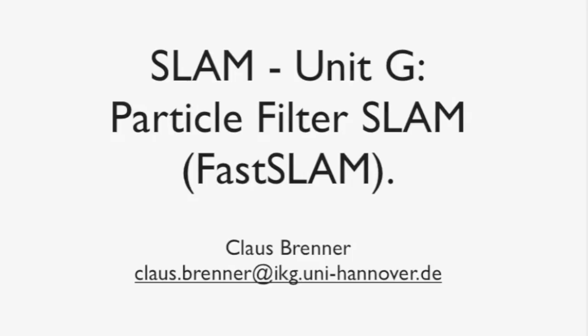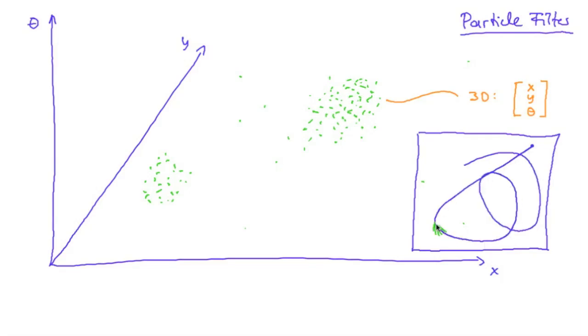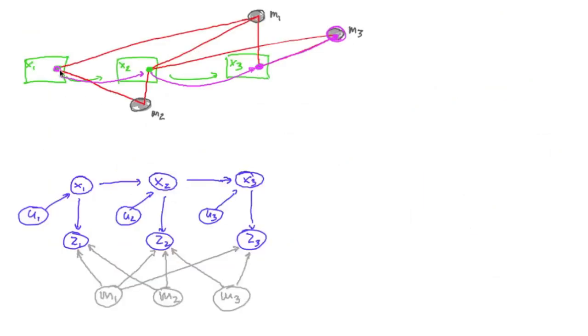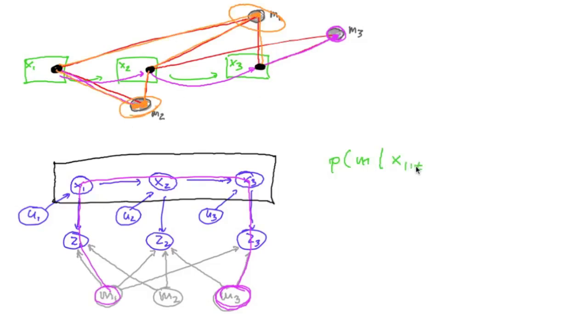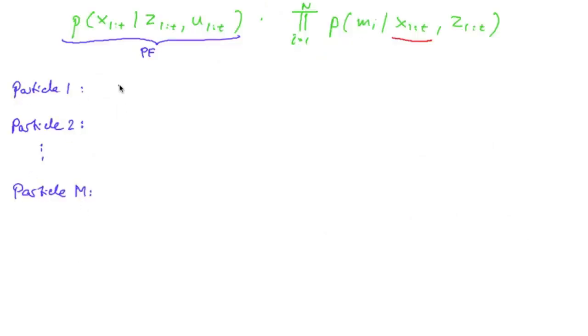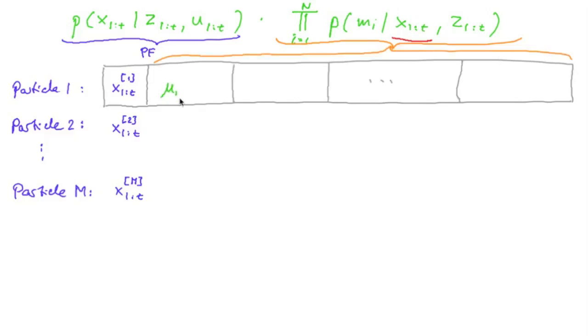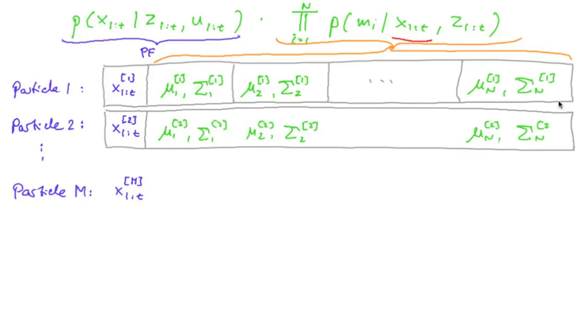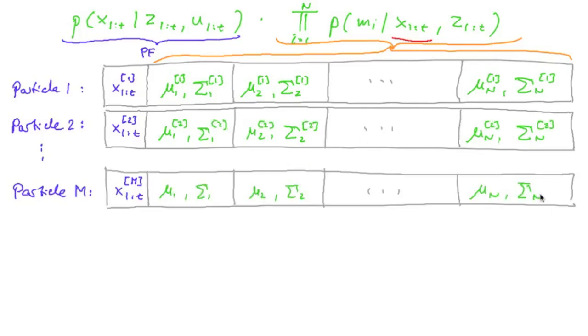Unit G is about particle filter SLAM. We will see how a factorization trick allows us to split the posterior into a term for the robot's pose which we will represent using particles and another term for the positions of all landmarks which we will represent by individual extended Kalman filters where each particle holds a set of filters one for each landmark.